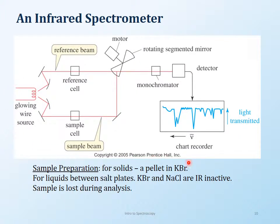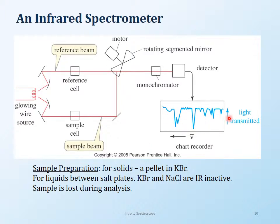This is a schematic of what an IR instrument looks like. You will have a source that gives you infrared radiation. Depending on the instrument, you may have a dual beam or a single beam — with a dual beam you have a reference cell and a sample cell. Most IRs these days are single beam, so you just keep your sample, the IR radiation passes through, goes through a mirror, reaches the detector, and the output is displayed on a computer.